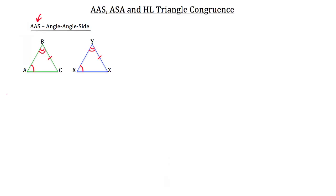In terms of an actual math problem, we can put numbers in here and prove congruency. For example, if you knew that this triangle's side length was 4, and this triangle's side length was 4, and this triangle's side length was 3, because of the angle angle side postulate — knowing that angles A and B are congruent to angles X and Y, and that segment BC is congruent to segment YZ — you can tell that triangle ABC is congruent to triangle XYZ.